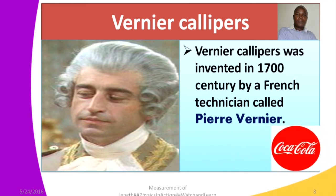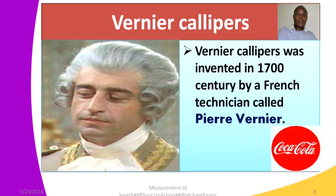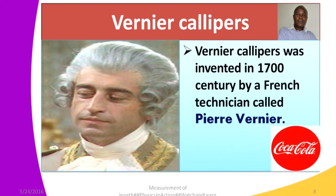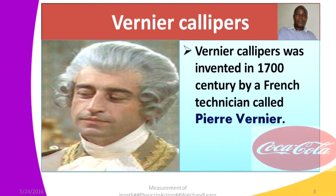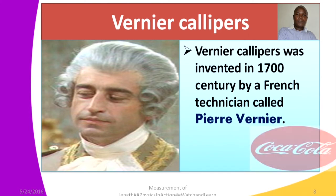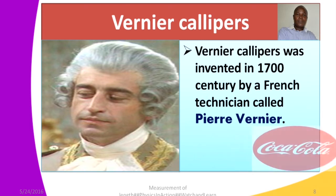The Vernier calipers you use in your school was invented by Pierre Vernier. When you discuss this with a friend, you can ask them: who is the inventor of Vernier calipers? The answer is Pierre Vernier. The name 'Vernier' is the name of the inventor, and 'calipers' is a holding device. The instrument has jaws that hold the object so you can measure it. It was invented in the 17th century.